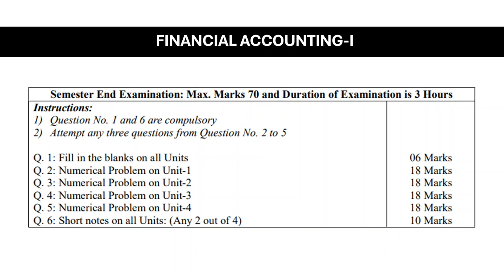Question No. 3 is a numerical problem on Unit No. 2, for 18 marks. In Question No. 3, the numerical problem will be asked on Unit No. 2 — that is sale of firm to a company, meaning conversion of a partnership firm into a limited company. The numerical problem under Question No. 3 will carry 18 marks.